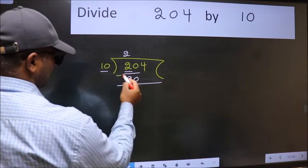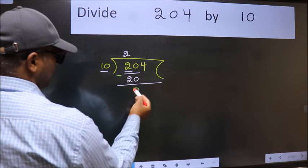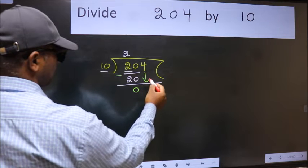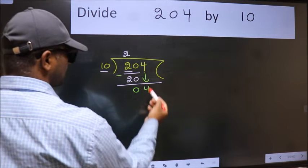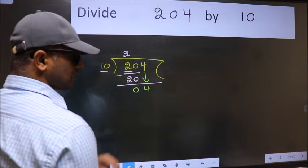Now we should subtract. We get 0. After this, bring down the beside number. So 4 down. After this step, the mistake happens.